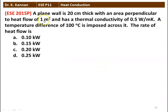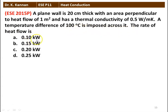First question: a plane wall is 20 centimeter thick with an area perpendicular to the heat flow of 1 meter square, has a thermal conductivity of 0.5 watts per meter Kelvin. A temperature difference of 100 degree Celsius is imposed across it. The rate of heat flow is: (A) 0.1 kilowatt, (B) 0.15 kilowatt, (C) 0.20 kilowatt, (D) 0.25 kilowatt.